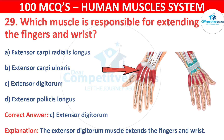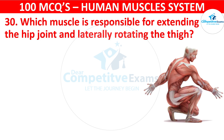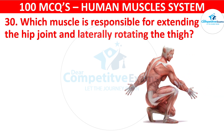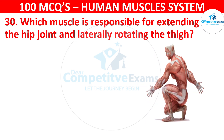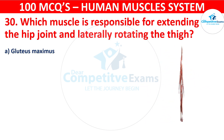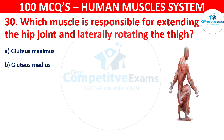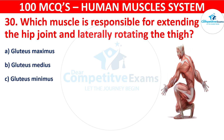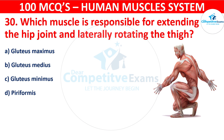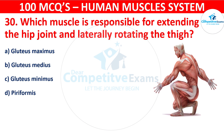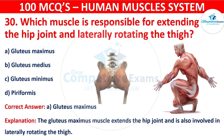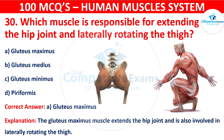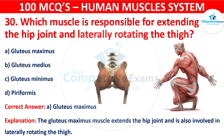Question 30. Which muscle is responsible for extending the hip joint and laterally rotating the thigh? Your options are Gluteus maximus, Gluteus medius, Gluteus minimus, or Piriformis. The correct answer is A, i.e. Gluteus maximus. The gluteus maximus muscle extends the hip joint and is also involved in laterally rotating the thigh.